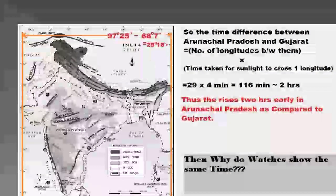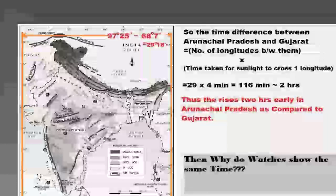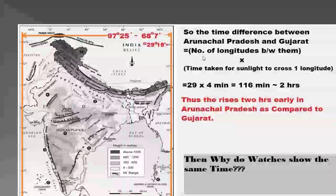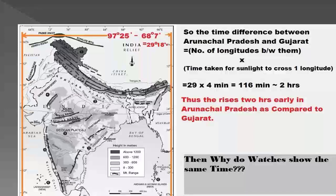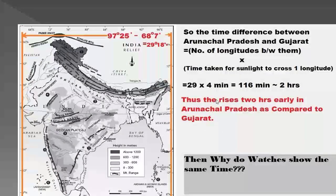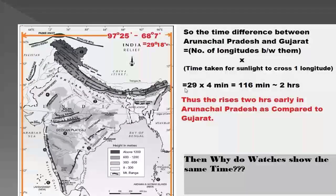The time difference between Arunachal Pradesh and Gujarat varies. Arunachal Pradesh is the easternmost state in India, with a longitude of 97 degrees 25 minutes east. Gujarat is the westernmost state in India, with a longitude of 68 degrees 7 minutes east. The total number of longitudes passing through India is around 30, from Arunachal Pradesh to Gujarat.